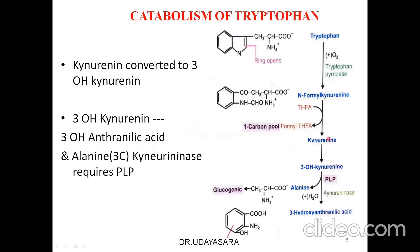Kynurenine is hydroxylated to form 3-hydroxykynurenine. Then 3-hydroxykynurenine is converted to 3-hydroxyanthranilic acid, catalyzed by the enzyme kynureninase, which is a pyridoxal phosphate (PLP)-dependent enzyme. During this conversion, a 3-carbon alanine is also produced. Alanine is a glucogenic molecule, explaining why tryptophan is partly glucogenic.